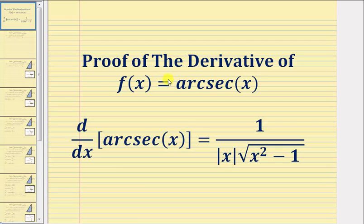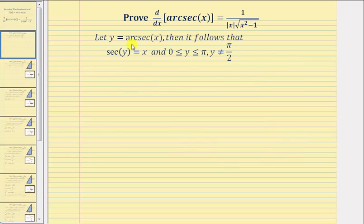Welcome to a proof of the derivative of f of x equals arc secant x. We'll prove the derivative of arc secant x with respect to x equals one divided by the absolute value of x times the square root of the quantity x squared minus one. To begin, we'll let y equal arc secant x.